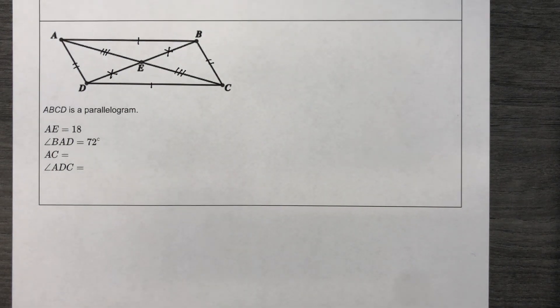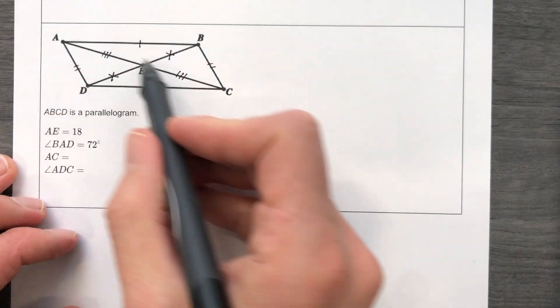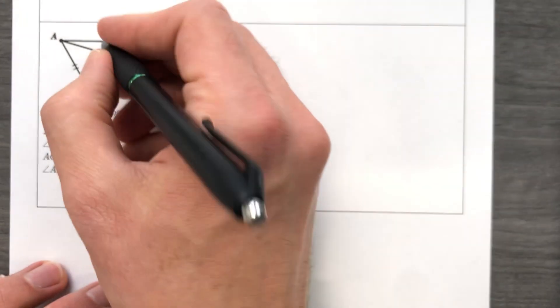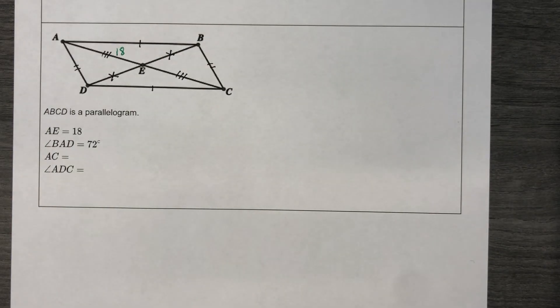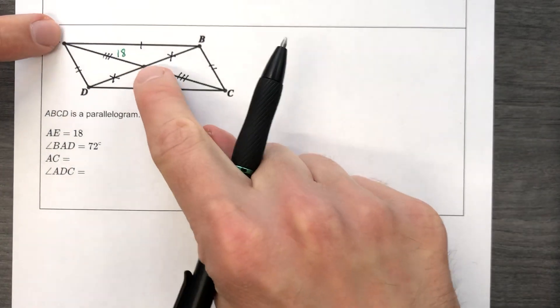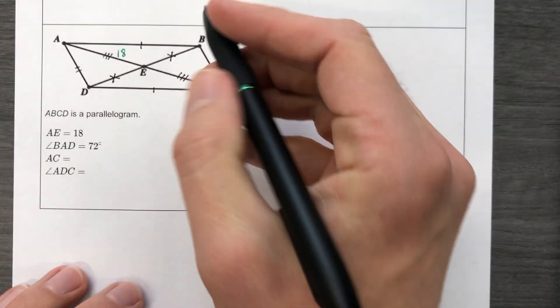So they tell us that A, E is equal to 18. So from A to E, this is 18. Let's make it stand out with green. This distance is 18. Stop right there. Let me just say what you already know. The diagonals bisect each other in a parallelogram, so this must be 18.